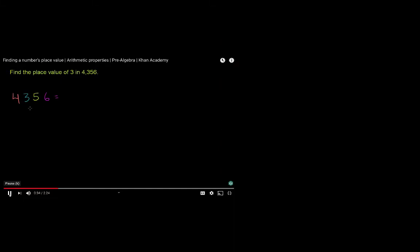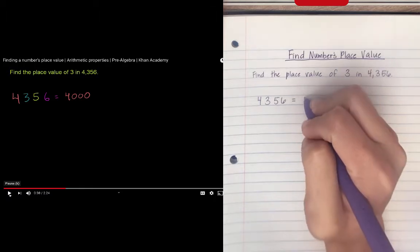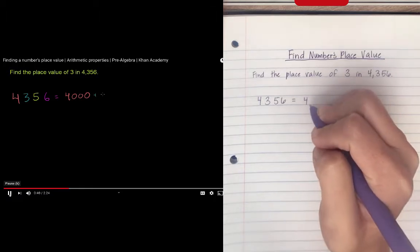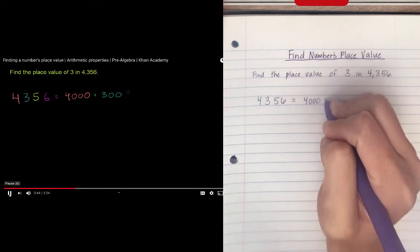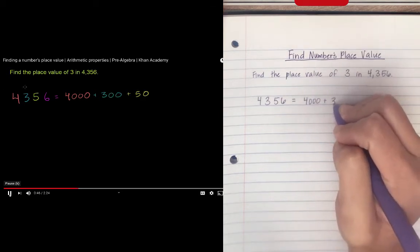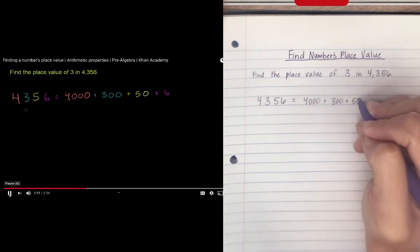And just think about how I just said it, it is equal to 4,000. So I would pause it and I would write down 4,000 plus 300, plus 300, plus 50, plus 50, plus 6. You could come up with that just based on how we said it, 4,356.